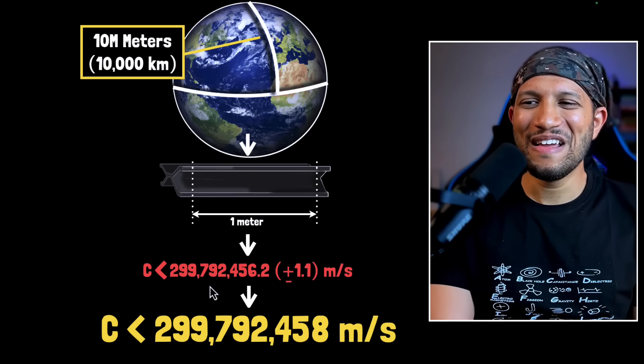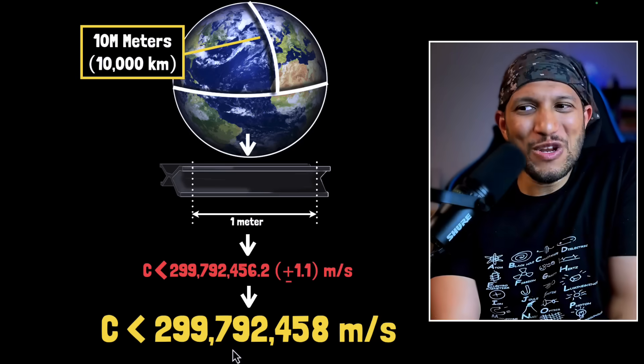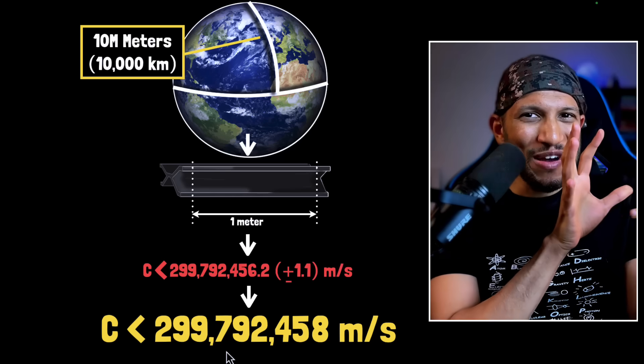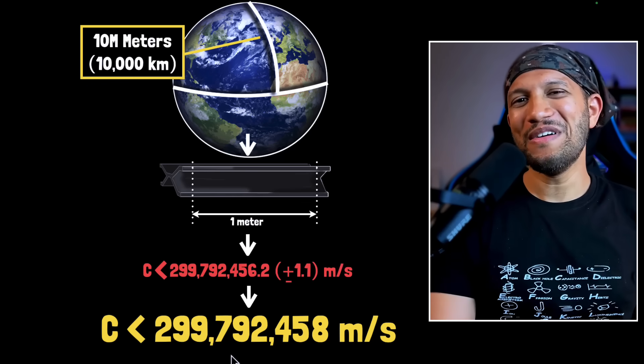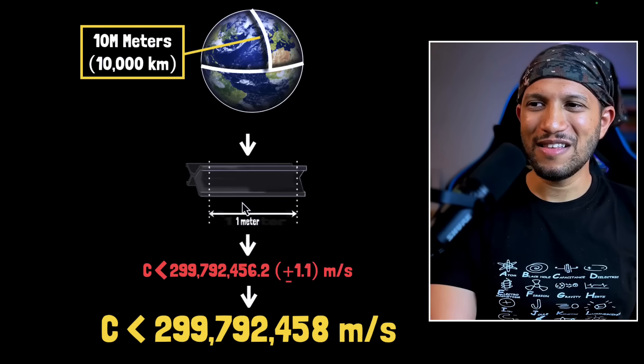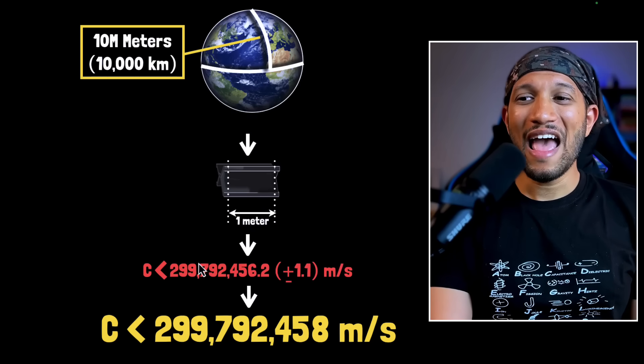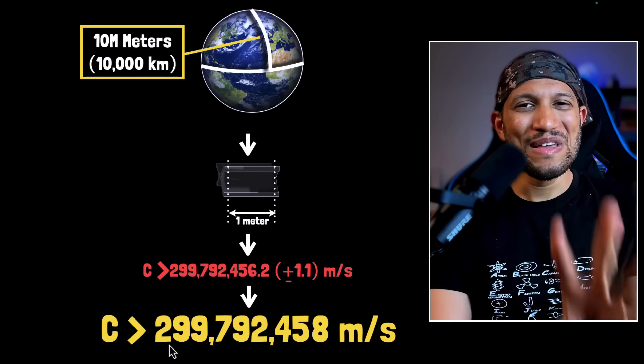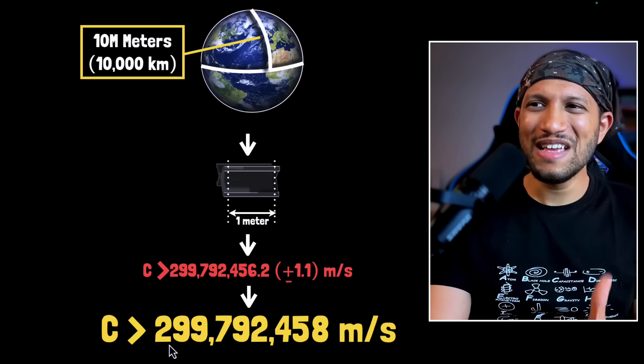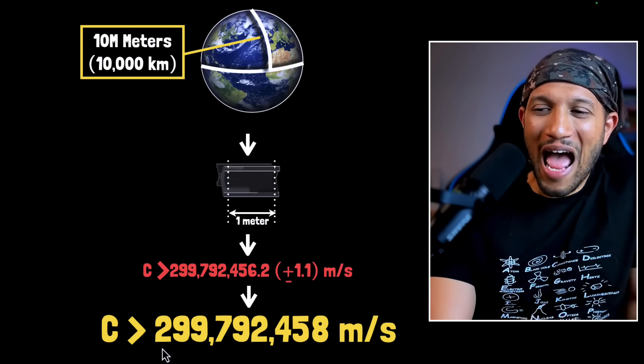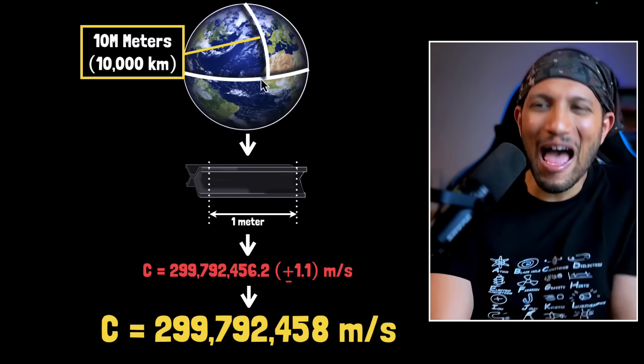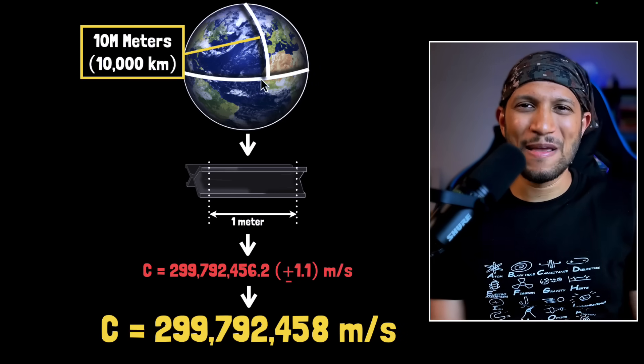And if this number would have been smaller, then obviously the number that we would have fixed would also have been smaller. So right in front of your eyes, you can see if the earth was bigger, we would have gotten a smaller number. And similarly, if the earth was slightly smaller, then the meter stick, the meter definition would have been smaller. And then we would have gotten a slightly bigger number. And that's what I told you at the beginning of the video. The reason why the number happens to be exactly this number is because earth happens to have this specific size. Booyah!